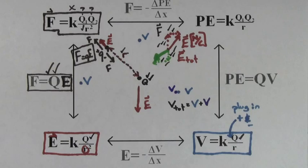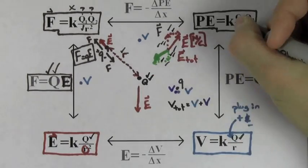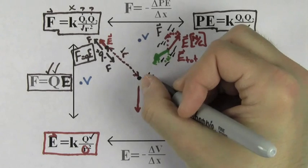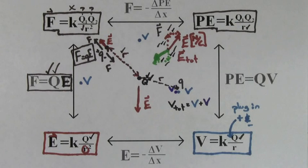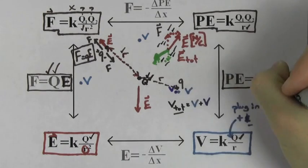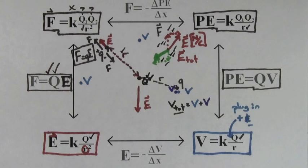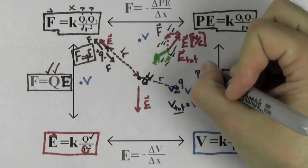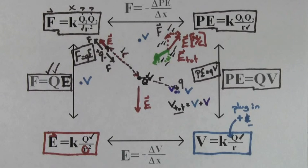You can find the electric potential energy that exists between two point charges using the formula KQQ over R. R again is the distance between the two charges. And just like F equals QE is a much easier way to find the electric force than KQQ over R squared, PE equals Q times V is a much easier way to find the electric potential energy than KQQ over R. So if you already know the electric potential at a point in space, just multiply Q times V to find the electric potential energy.